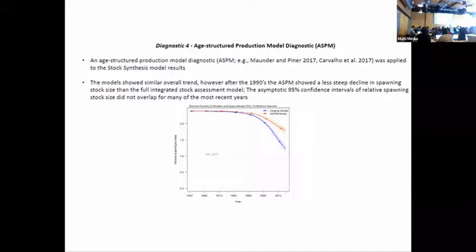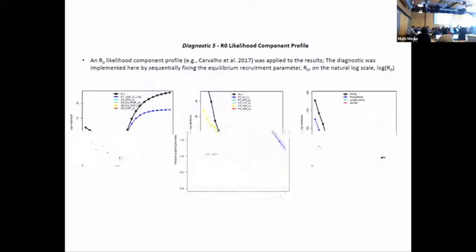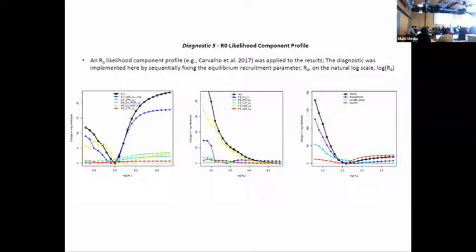This is the R0 profile likelihood. I think most people are familiar with it. On the lower axis is the important scaling parameter in the model, the log of equilibrium recruitment. On the y-axis is the change in the log likelihood. Bigger values on the y-axis suggest that the data component is more important. Shifts on the x-axis indicate that the different components want different values for the minimum likelihood. If you see a nice pattern like this then there's agreement, but if you see lines like this there's disagreement. These are the CPUEs, these are the fits to length composition which are in disagreement with CPUE, and then these are the total recruitment, length composition, and survey which have slightly different minimums, so there's data conflict here.